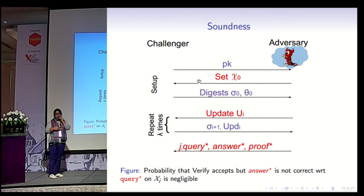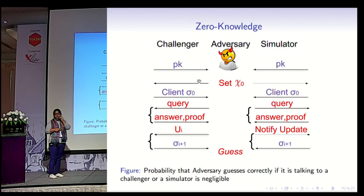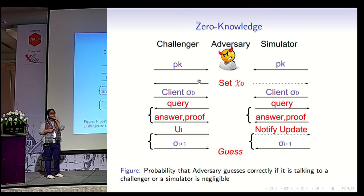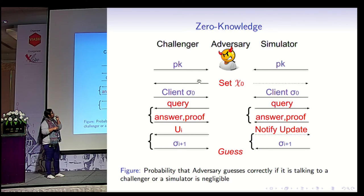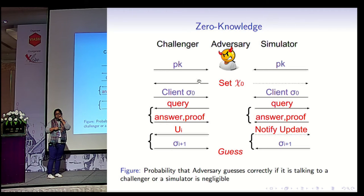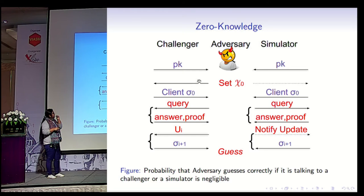This is a soundness definition. Then we formally define zero-knowledge using a simulation-based definition. This models adversarial behavior of the client who might try to learn more information than the answer itself from the proof of the answer. In this setup, the adversary receives the public key from the owner as before. It then comes up with the set chi-j of its choice, which is sent to the real challenger. But the simulator gets no information of this set whatsoever, except the notification that the adversary has committed to a set. It gets the client digest as a response, and the simulator simulates this digest without knowing the set.